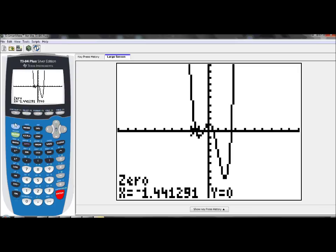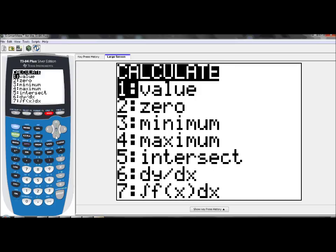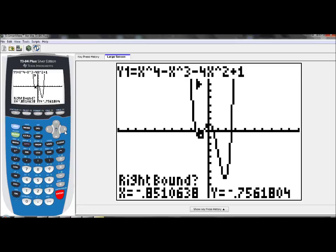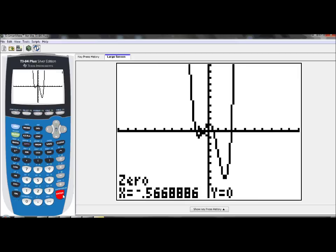We're going to have to do it again. So I'm going to hit second, calc, choose option two again. This time I'm going to use this zero. So I'm going to go over, mark a point to the left of it, and I'm to the left of it so I'm going to hit enter, right bound, go to the right of the zero, hit enter, and then guess, enter again. And so now I have my second zero.